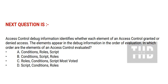Today's question: Access control debug information identifies whether each element of an access control granted or denied access. The elements appear in the debug information in the order of evaluation. In which order are the elements of an access control evaluated?